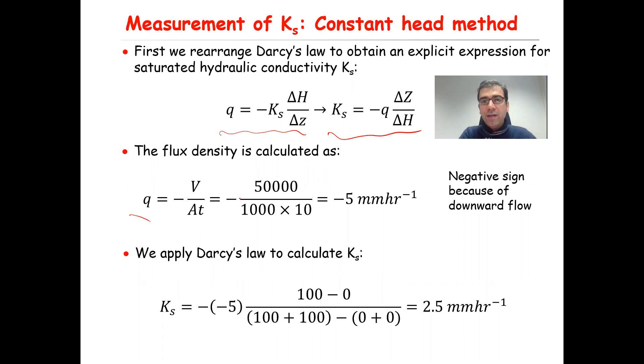The capital V is equal to 50,000, that's given in the question, and A is equal to 1000, that's given in the question, times t, the time required to collect the outflow, which is 10 hours. Therefore, that will be equal to minus five millimeters per hour, and this negative sign indicates the velocity is downward. So you have the q now, and you plug it in to calculate Ks.